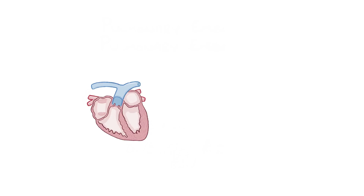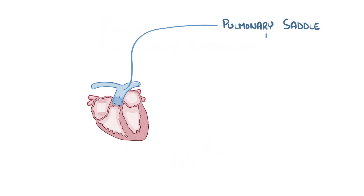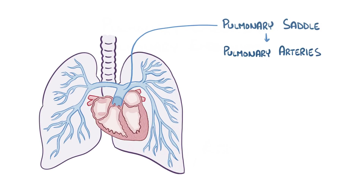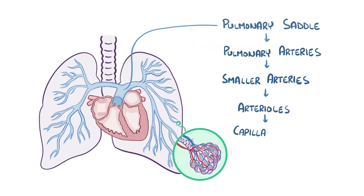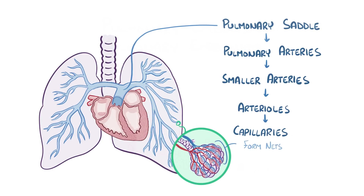The pulmonary artery splits at the spot called the pulmonary saddle, which looks a little bit like a horse saddle, and then the right and left pulmonary arteries enter their respective lungs. Subsequent branches off the pulmonary artery lead to smaller and smaller arteries, then arterioles, and finally capillaries that form nets around the alveoli, which is where gas exchange happens.